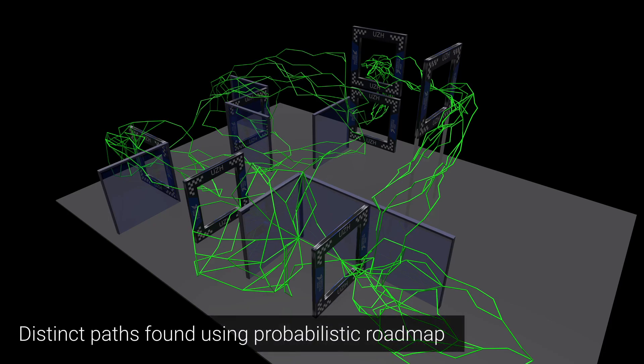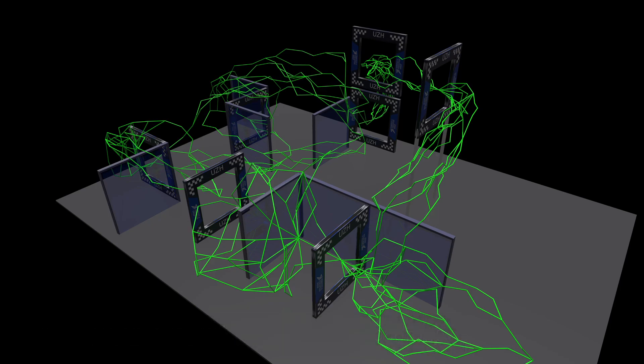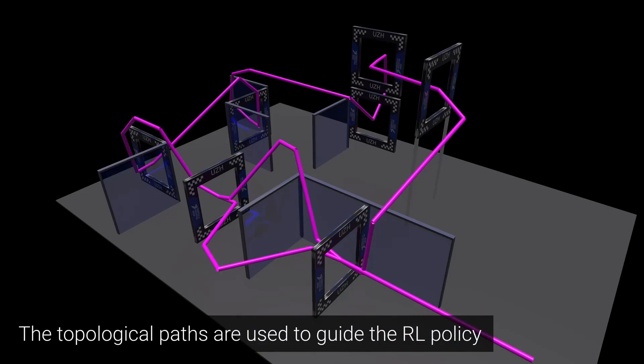In the first step, collision-free paths are found using the probabilistic roadmap method. Afterwards, distinct paths are found within the roadmap to capture different strategies on how to avoid an obstacle.